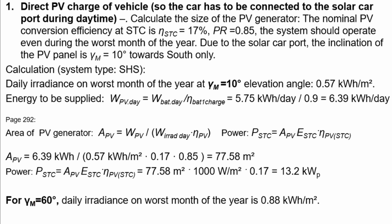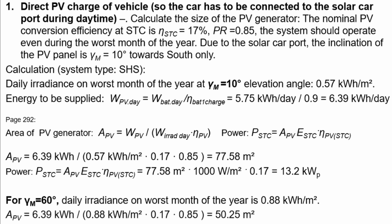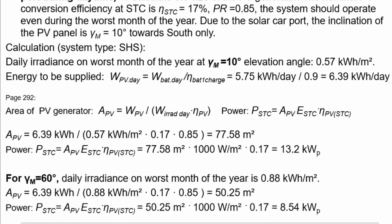If we apply 60° elevation, the typical irradiance for the worst month increases to 0.88 kWh/m²/day. The required area then reduces to only 50.25 m², and the equivalent peak power under standard test conditions is 8.54 kW.